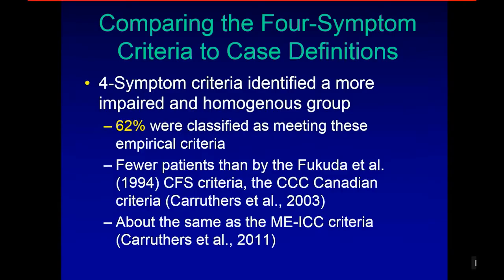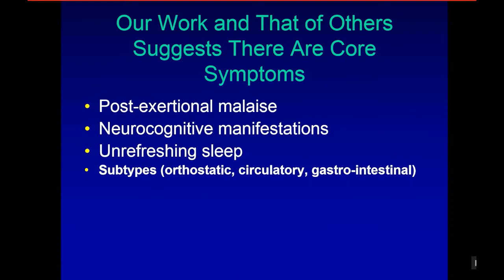Using this four-symptom criteria, 62 were classified as meeting the empiric criteria — fewer patients than by the Fukuda CFS criteria, about the same amount as the ME ICC criteria. In general, our work suggests that post-exertional malaise, neurocognitive symptoms, and unrefreshing sleep are the key symptoms, with others being possibly subtypes.